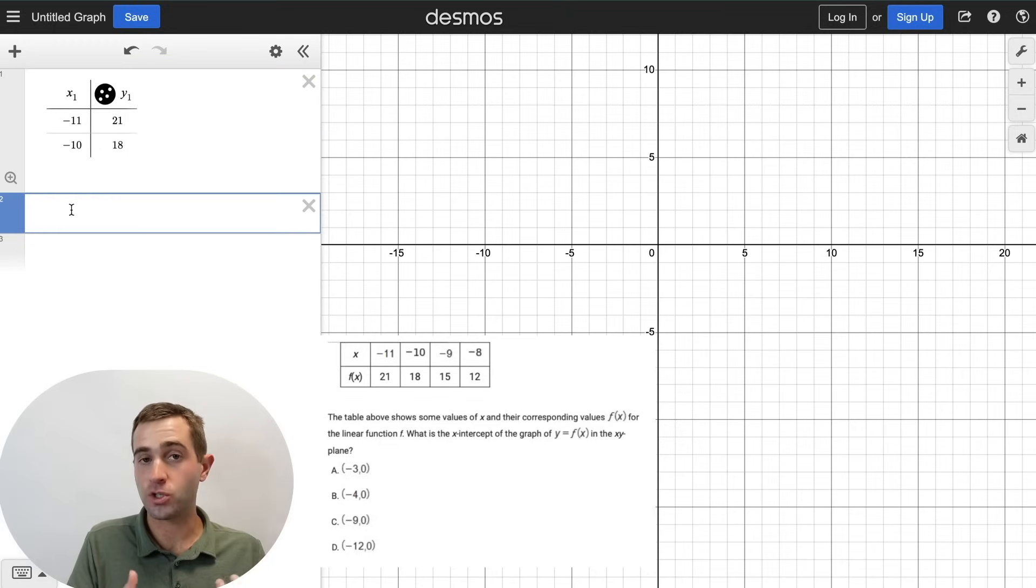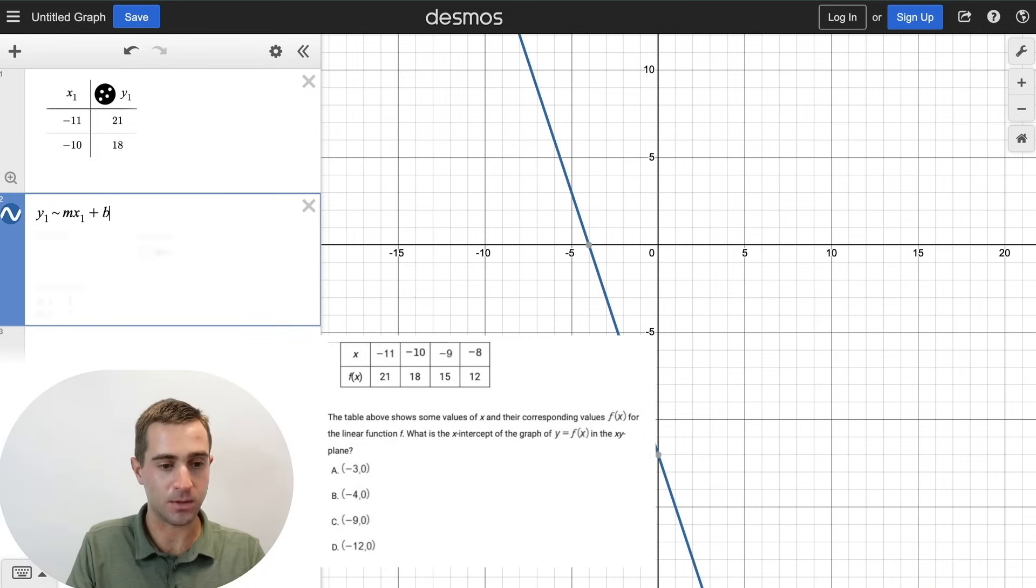If we want Desmos to solve for the equation for the line for us, which is going to let us solve for that x-intercept, we simply need to do y1 so it knows to pull from the table, and then you'll hit this little tilde button, which is most likely on the top left portion of your keyboard, and then you're going to do mx1 plus b. That's going to give you your entire equation of the line, and it's even going to graph it for you. Now if we want to find that x-intercept, we just have to click on that, and we can see that negative 4 is going to give us our correct answer.